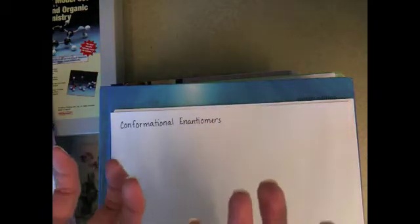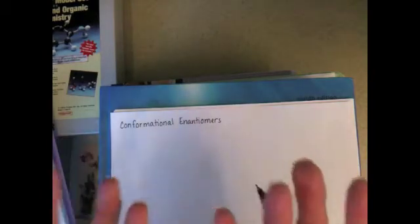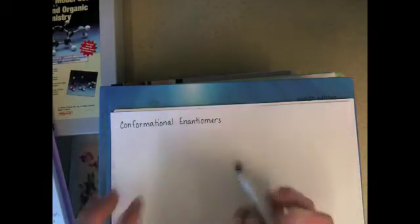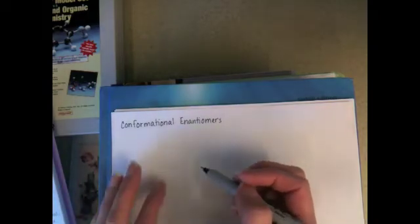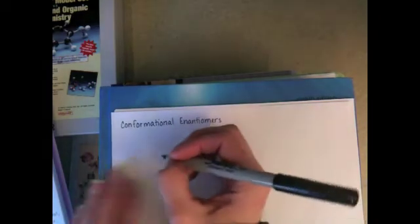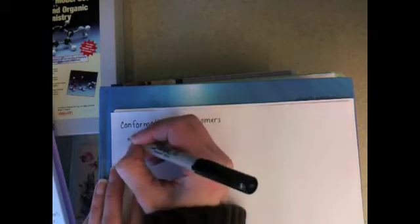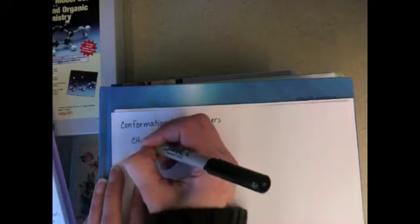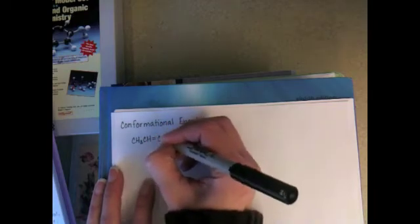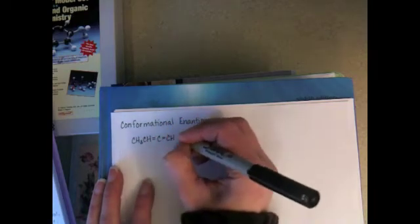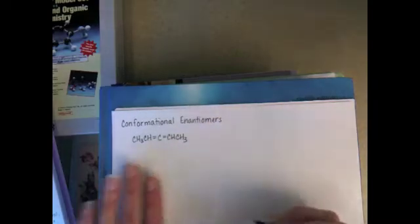When a molecule can't be superimposed on its mirror image or when it is different from its mirror image, it is overall chiral with or without the presence of chiral carbons. The two examples that we looked at in class were, first, a molecule called allene, which has this condensed formula.